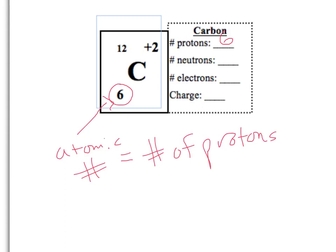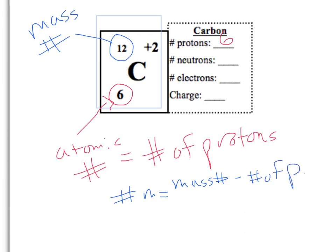Let's look at the number of neutrons. To figure out the number of neutrons, we have to look at the total mass. This is called the mass number. The number of neutrons equals the mass number minus the number of protons. In this case, it equals 12 minus 6, which equals 6.